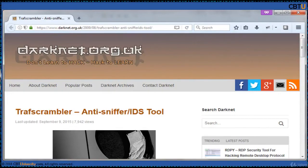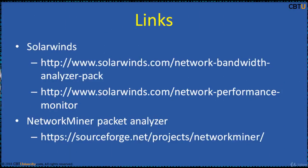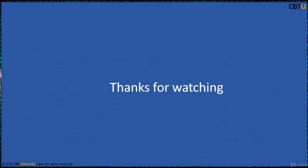TraffScrambler is an anti-sniffer IDS for OSX, licensed under BSD. Its features include injection of packets with bogus data and with randomly selected bad TCP checksums or bad TCP sequences. There are also many customized and commercial software options available. Popular ones include the Network Bandwidth Analyzer Pack and Network Performance Monitor from SolarWinds. Network Miner is also a packet analyzer. Thanks for watching.